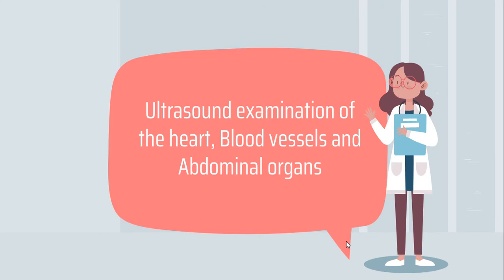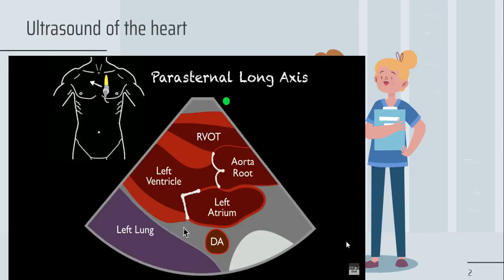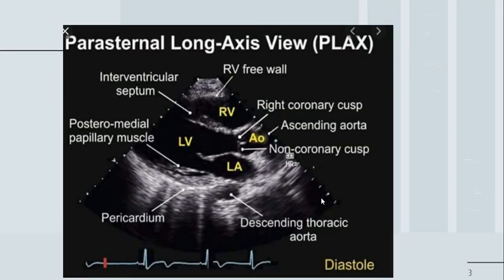Starting off, we'll go with the ultrasound of the heart. For the cardiac ultrasound, you have four different positions. First is the parasternal long axis view. In this view, you can see the right ventricle, left ventricle, aortic root, and left atrium. This drawing shows how it's supposed to look, and next is what an actual ultrasound looks like — the same structures in a real parasternal long axis image.